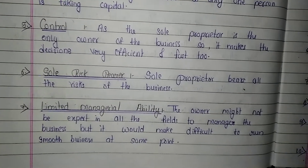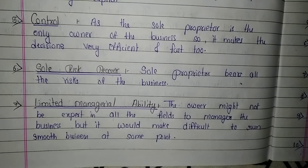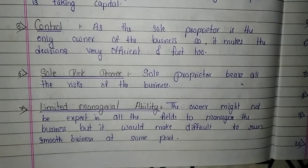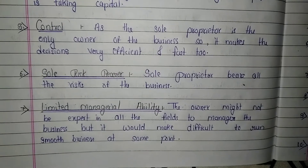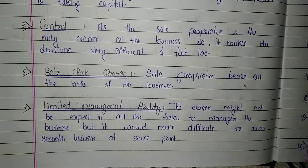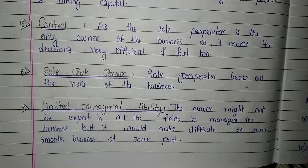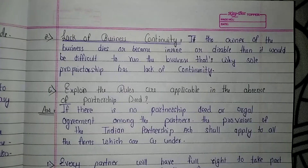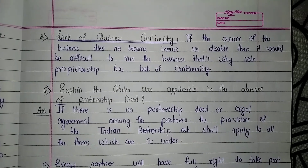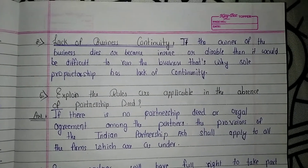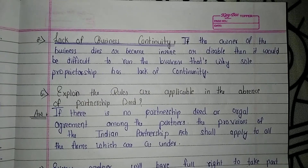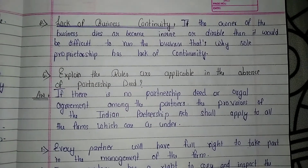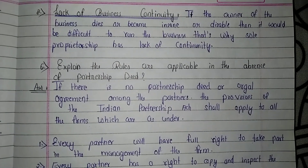The seventh characteristic is limited managerial ability. It is not possible for a single person to be expert in all fields of business, so there may be problems managing the business in the future. The eighth point is lack of business continuity — if the owner dies, becomes insane, or becomes disabled, it would be difficult to run the business, which is why sole proprietorship lacks continuity.